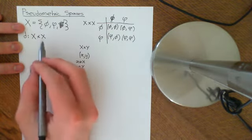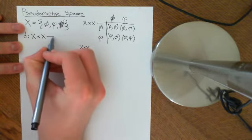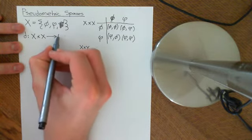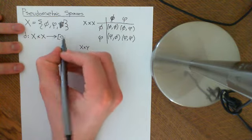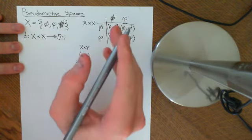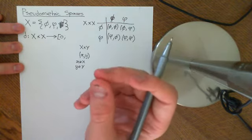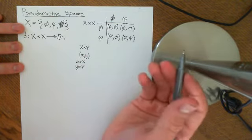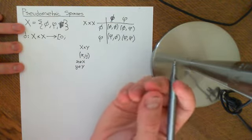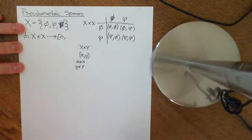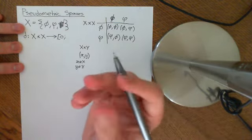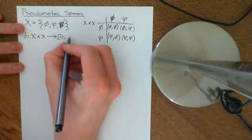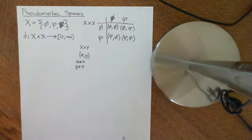The distance function acts on this set and maps it onto the non-negative real numbers. The positive real numbers don't include zero, whereas non-negative real numbers do include zero. So zero is not a negative number, so zero is included. Positive means strictly greater than zero, so we want non-negative — though I will sometimes mistakenly say positive rather than non-negative.